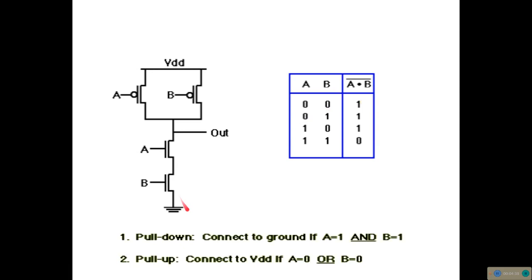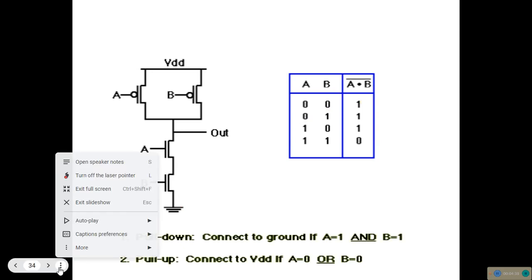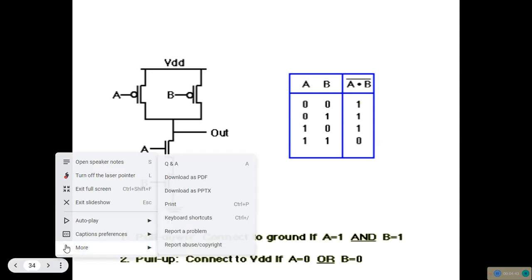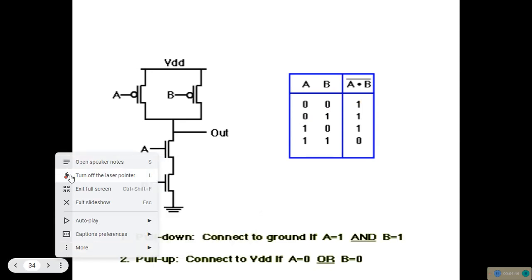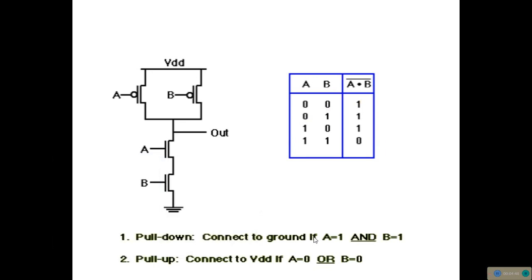The N-MOS transistor functions as a pull-down network and the P-MOS transistor functions as a pull-up network. The pull-down network is connected accordingly.